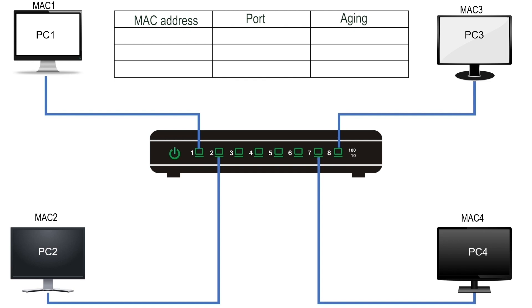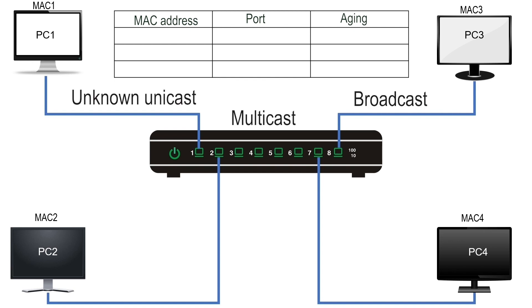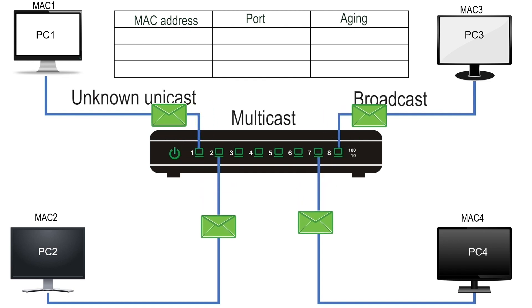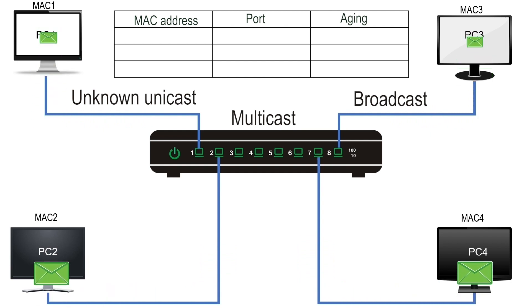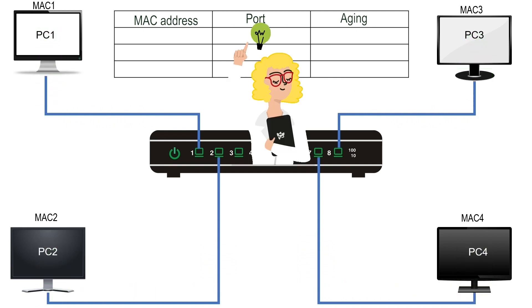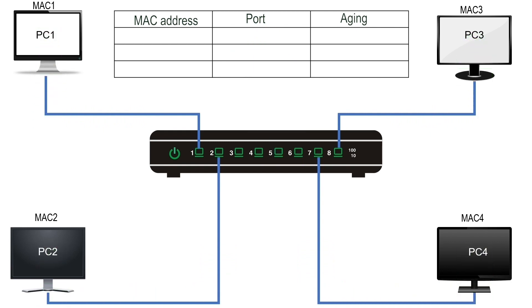Because of this, a frame having an unknown unicast, multicast, or broadcast address in the destination address field is always flooded by the switch.